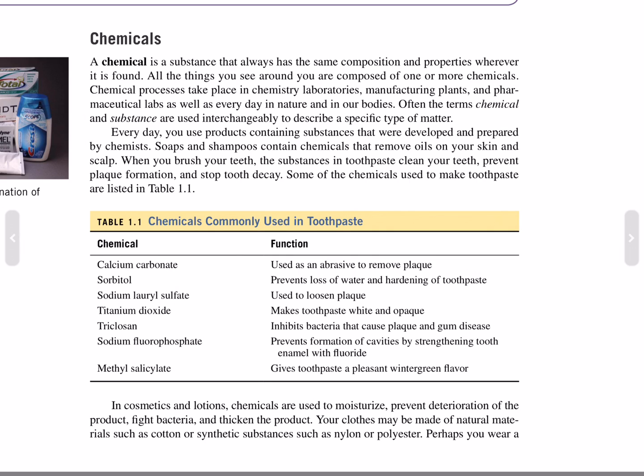Often the terms chemical and substance are used interchangeably to describe a specific type of matter. Every day you use products containing substances that were developed and prepared by chemists. Soaps and shampoos contain chemicals that remove oil from your skin and scalp. When you brush your teeth, the substances in toothpaste clean your teeth, prevent plaque formation, and stop tooth decay. Some of the chemicals used to make toothpaste are listed in Table 1.1.